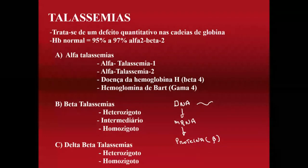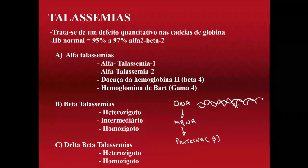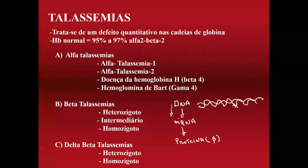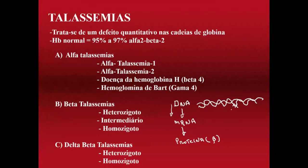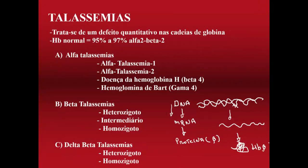O que pode acontecer? O DNA pode sofrer uma deleção — uma região é deletada, excluída. Se essa deleção ocorrer dentro do gene da beta, não haverá formação do RNA mensageiro. Se não há gene no DNA, não é possível produzir o RNA mensageiro que formaria a hemoglobina beta.